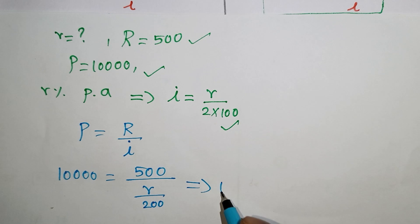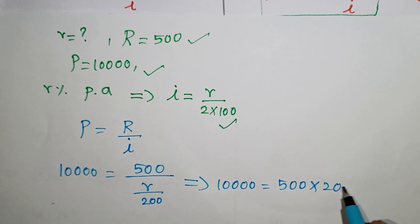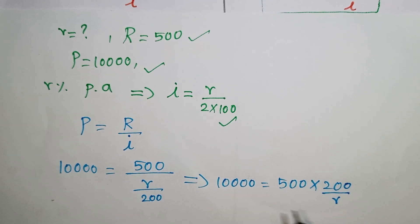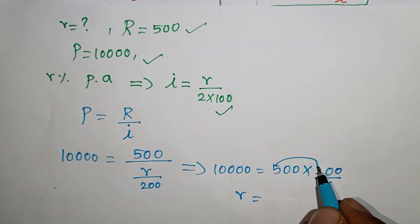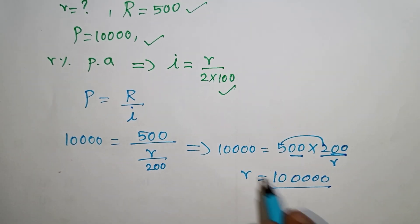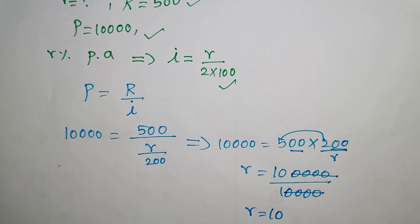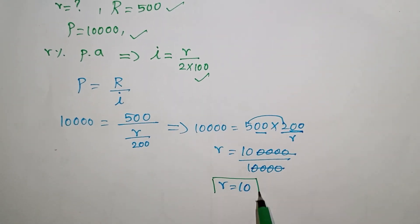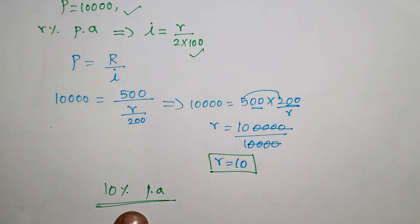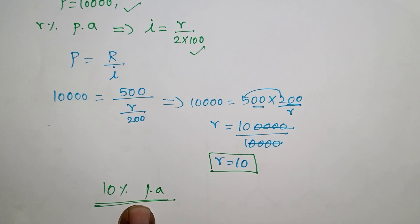Using the formula P equals R divided by i, we get 10,000 equals 500 divided by i. So i equals 500 divided by 10,000 equals 1 by 20. Since the period is 6 months, the annual rate equals i multiplied by 2, giving the rate of interest as 10% per annum. If you liked this video, share it with friends and subscribe for more videos.